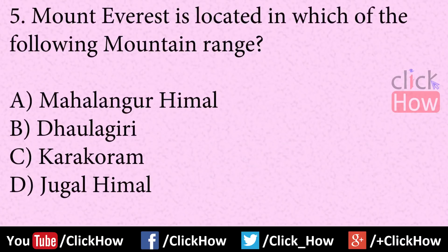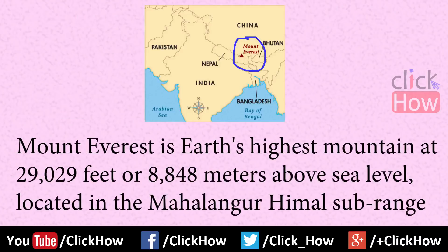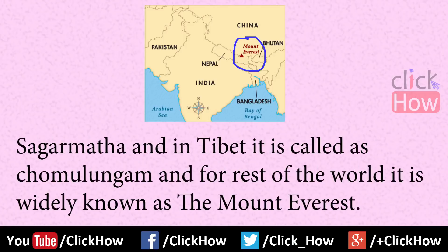Question number 5: Mount Everest is located in which of the following mountain ranges? Answer is option A, Mahalangur Himal. Mount Everest is Earth's highest mountain at 29,029 feet or 8,848 meters above sea level, located in the Mahalangur Himal sub-range of the Himalayas. Mount Everest is situated on the boundary of Nepal and Tibet. In Nepal it is known as Sagarmatha, in Tibet as Chomolungma, and for the rest of the world as Mount Everest.